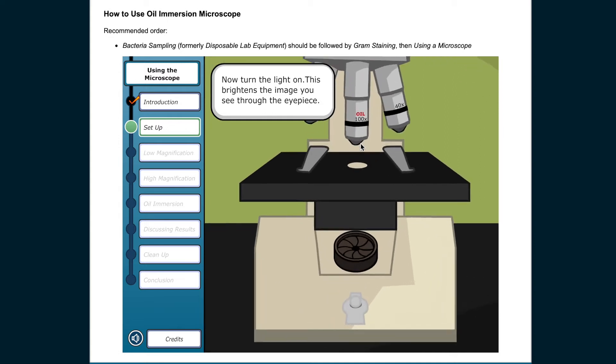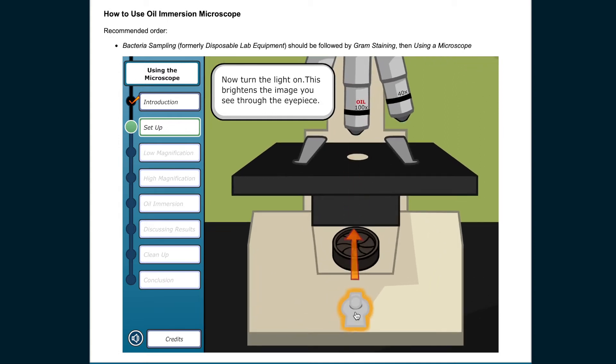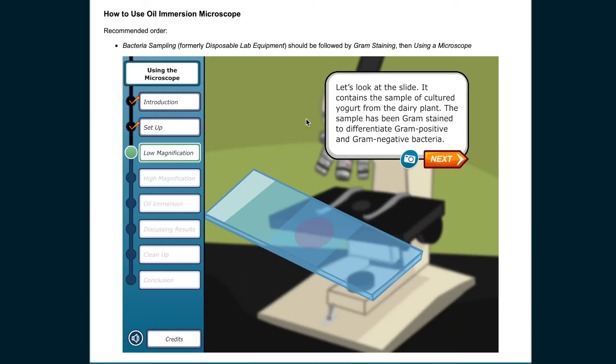Now turn the light on. This brightens the image you see through the eyepiece. Let's look at the slide. It contains the sample of cultured yogurt from the dairy plant. The sample has been gram-stained to differentiate gram-positive and gram-negative bacteria.